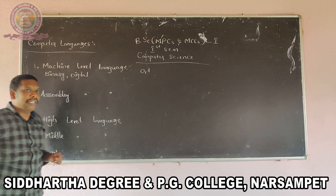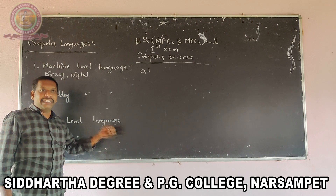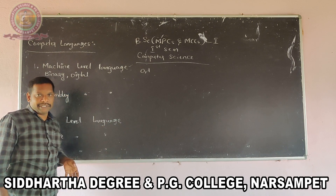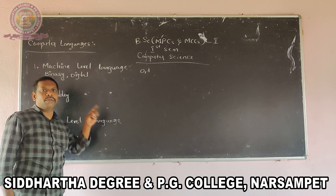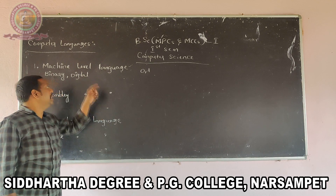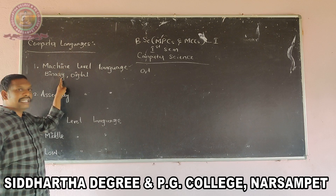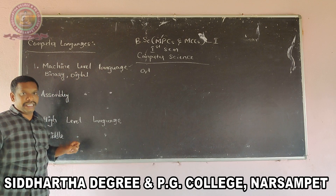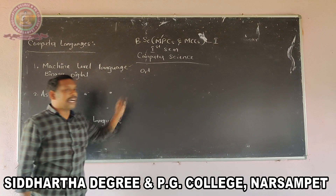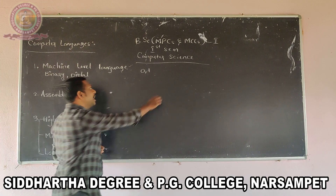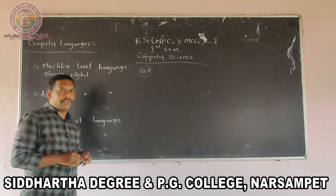A computer does not understand Telugu, Hindi, English, Tamil, Urdu, or any other language. A computer can understand only one language. That language is machine level language, also called binary language and also called digital language. Binary means 0 and 1, so the computer can understand only the 0 and 1 language.